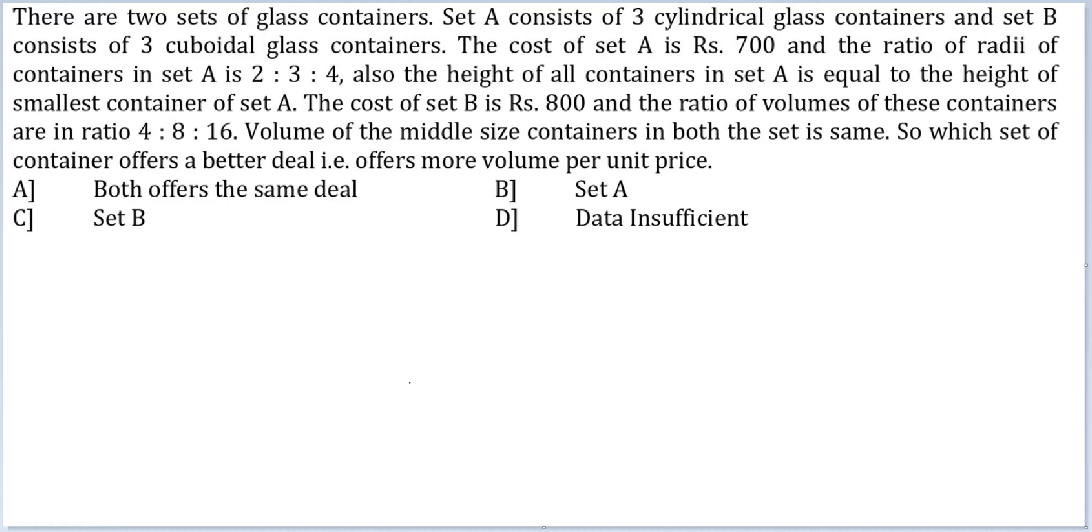Set A consists of three cylindrical glass containers and set B consists of three cuboidal glass containers. The cost of set A is 700 rupees and the ratio of radii of containers in set A is 2:3:4. Also, the height of all containers in set A is equal to the height of the smallest container in set A. This is a different way of saying that all three heights are identical. Therefore, the ratio of their area would be, ratio of area in set A,